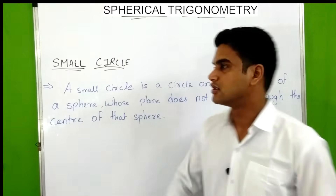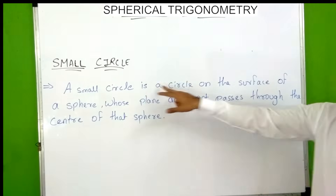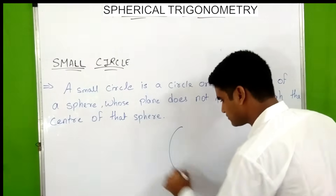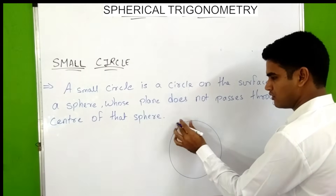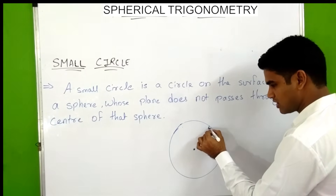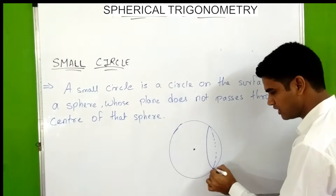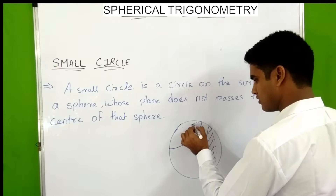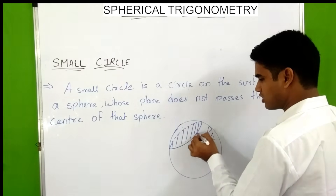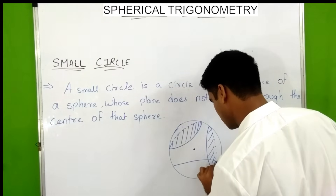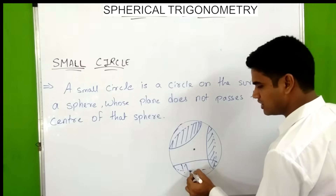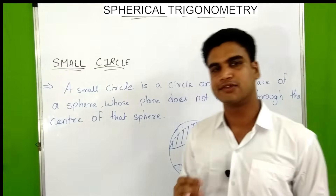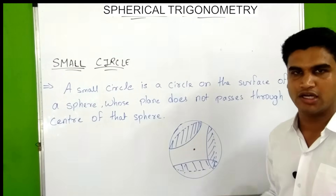Next is small circles. A small circle is a circle on the surface of a sphere whose plane does not pass through the center of that sphere. For example, a circle drawn on the surface of a sphere where the plane does not pass through the center — these are known as small circles. The radius of a small circle is less than the radius of the sphere.